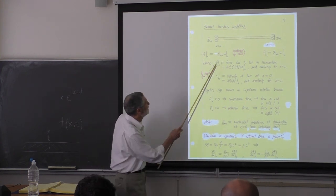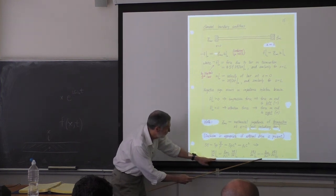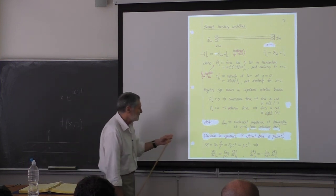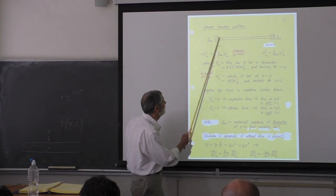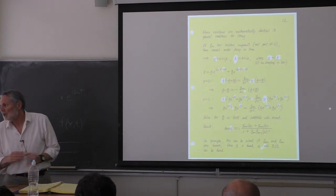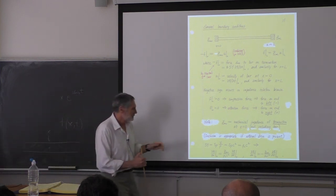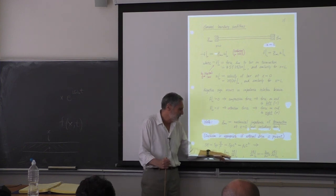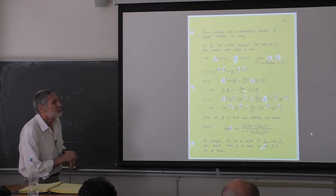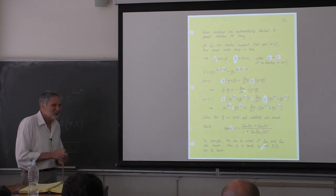Our two boundary conditions boil down to two expressions. This is general for whatever impedances you may have at either end. We've seen this before — it seemed familiar, I think we did this for a string too, for general boundary conditions.